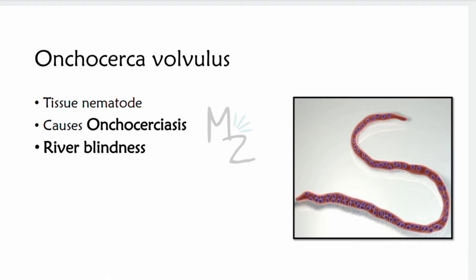Onchocerca volvulus is a tissue nematode. It is responsible for causing Onchocerciasis, which is also called River Blindness. The vector responsible for transferring this disease is the blackfly. It is called River Blindness because the blackflies develop in rivers, and people who live along those rivers are affected.